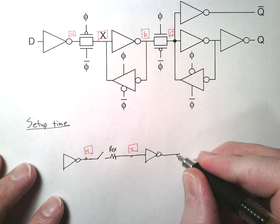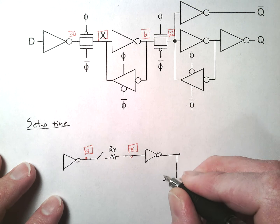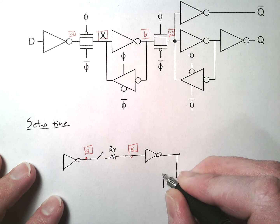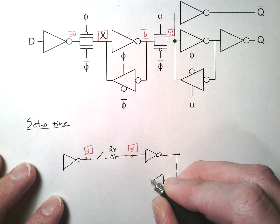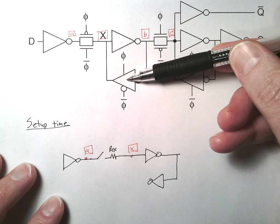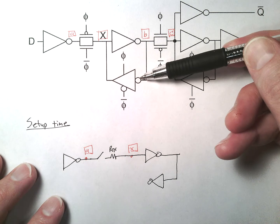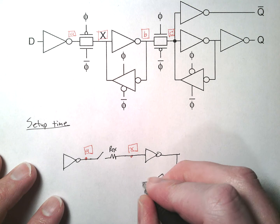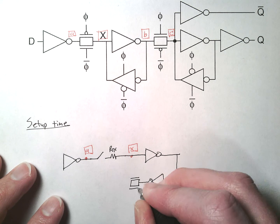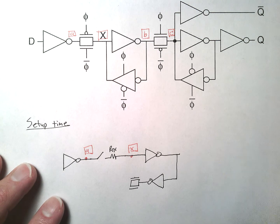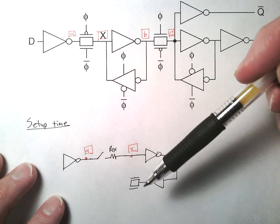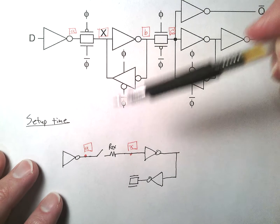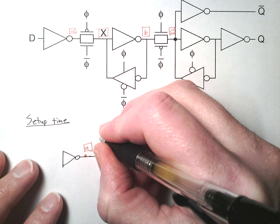We have our feedback path, and I'm going to redraw this — because this is how we've done it in Electric — as an inverter. This is a tri-state inverter: we built an inverter followed by a transmission gate.